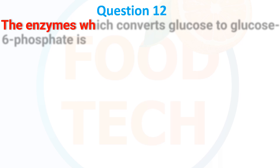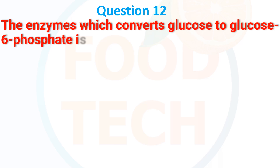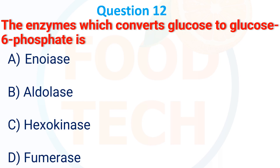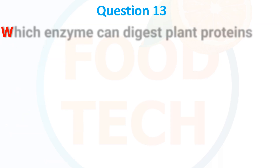The enzyme which converts glucose to glucose-6-phosphate is: A. enolase, B. aldolase, C. hexokinase, D. fumarase. The answer is C, hexokinase.